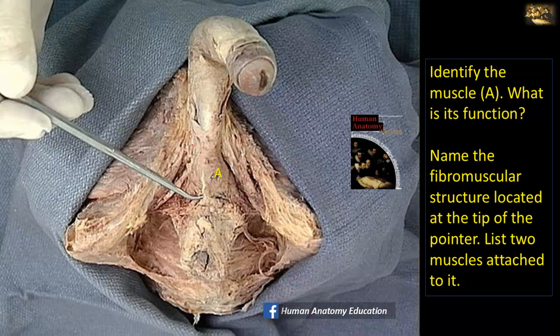Here you are asked to identify muscle A and what is its function. Name the fibromuscular structure located at the tip of the pointer, and list two muscles attached to it.